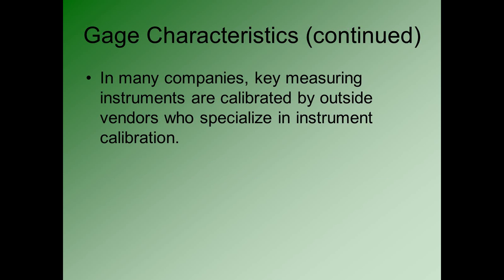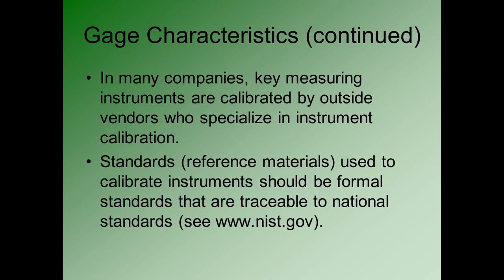Calibrating instruments can be difficult, and you need standard materials to measure against — you have to have the appropriate standard reference materials. These standard reference materials used to calibrate instruments should be formal standards traceable to national standards. In the United States, the national standards organization is the National Institute of Standards and Technology, and its website is at www.nist.gov.